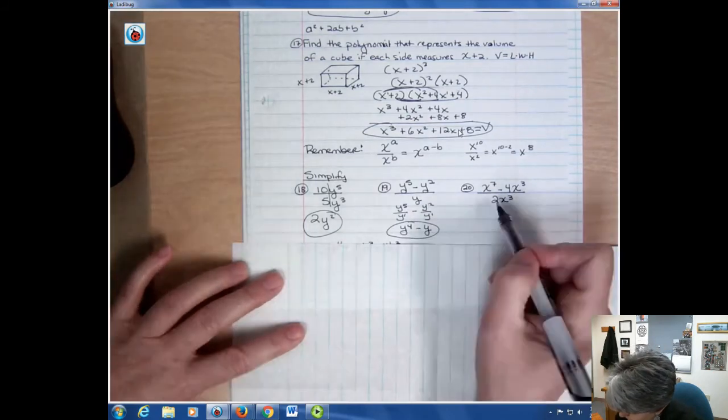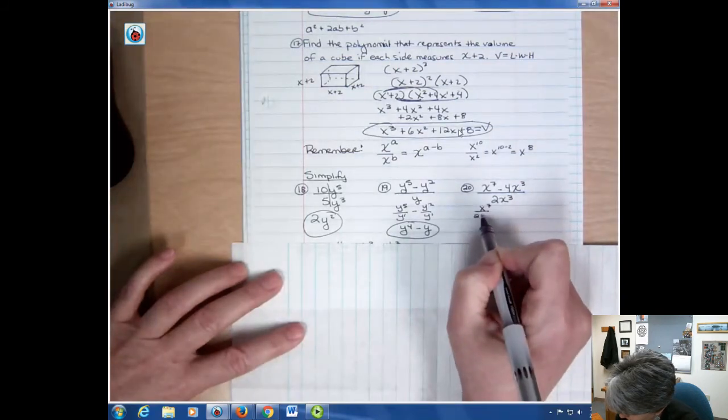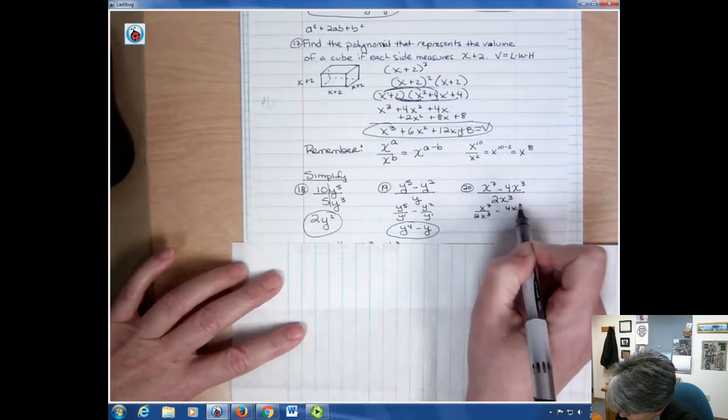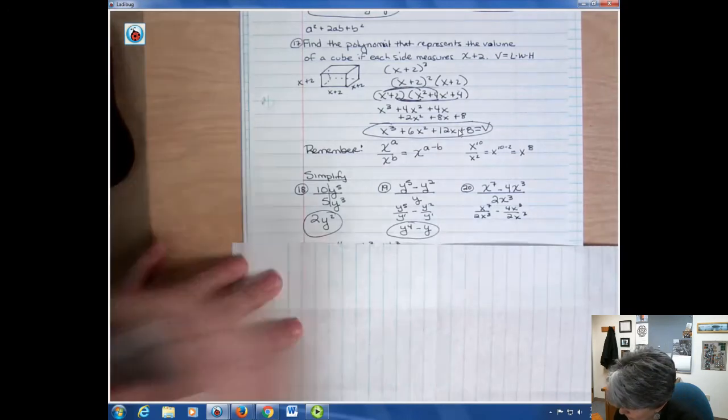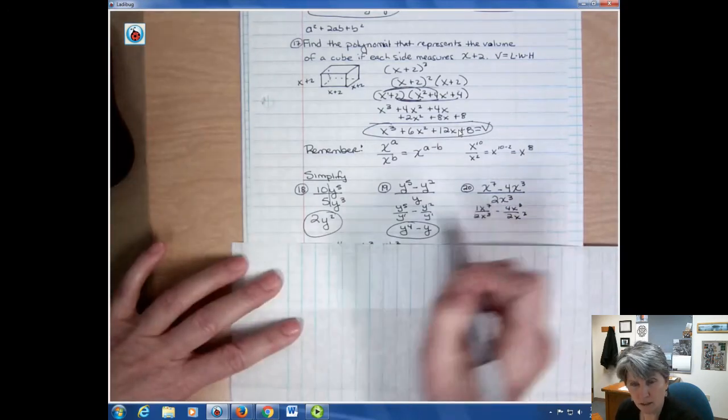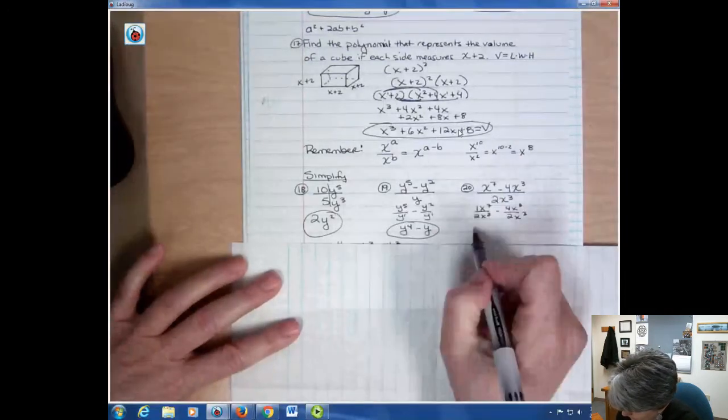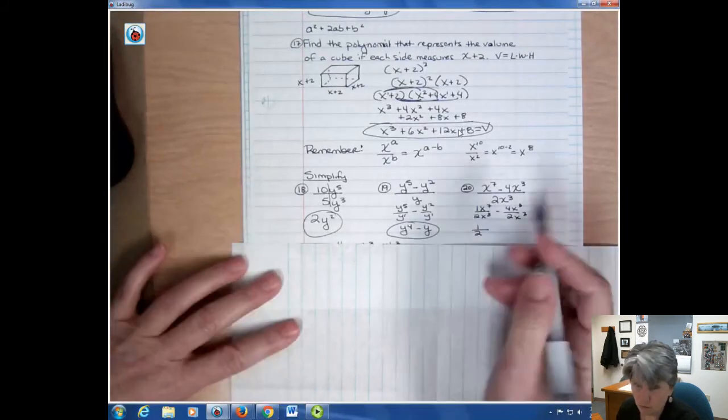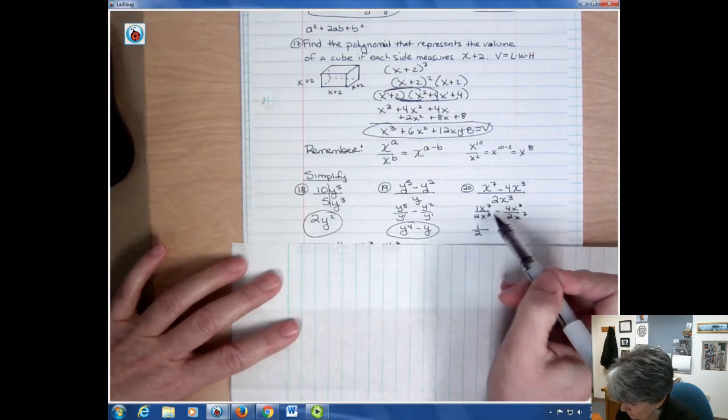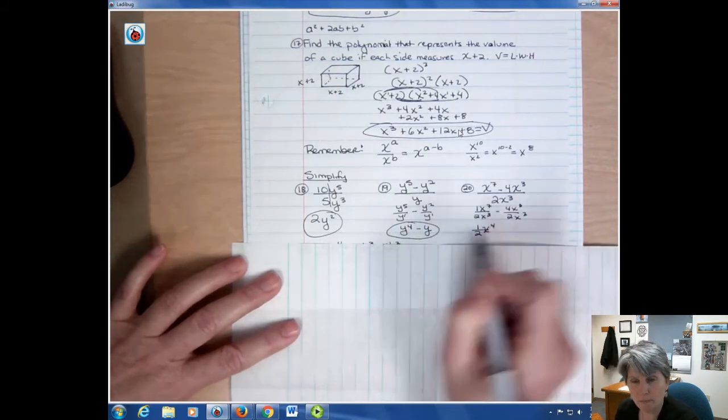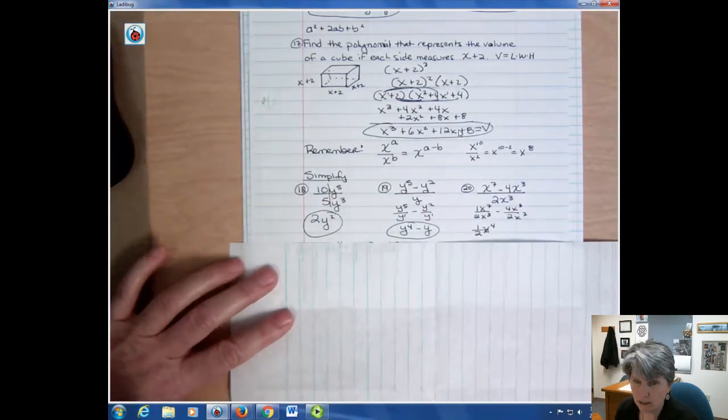So number 20, I'm going to do x to the seventh over 2x to the third minus 4x to the third over 2x to the third. Well, I have a coefficient of 1 on the top, even though I didn't see it. But I know that I can't do anything with one half, I still have one half as my answer. But I also know that I can simplify the x parts by subtracting my powers. 7 minus 3 is x to the fourth power. If you think I'm going too fast, then you need to pause it, write down, catch up.